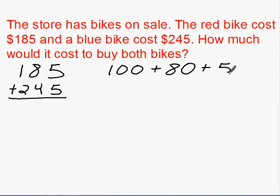They would do the same thing to the other number. So we'd have 200 plus 40 plus 5.